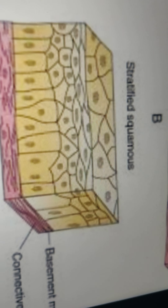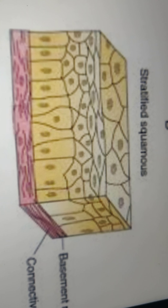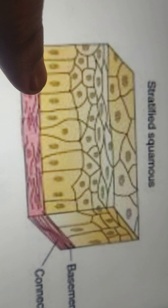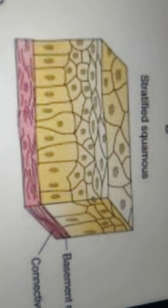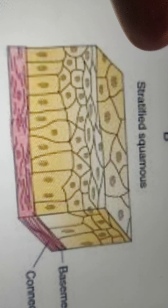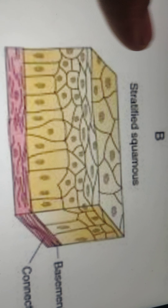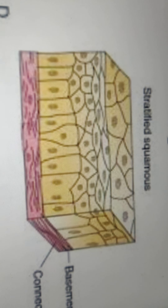The deepest layer contains columnar cells. As they go upward, as we have seen in the skin, the cells become keratinized. New cells form at the base, the older ones move upward, become dead, and are removed and replaced by new cells. So the upper regions have flat cells and the lower deepest regions have columnar cells.